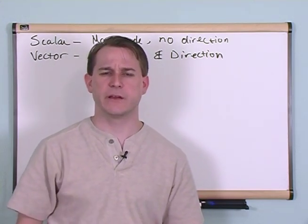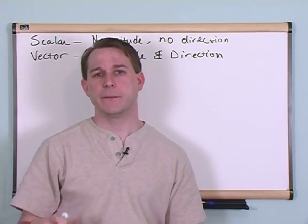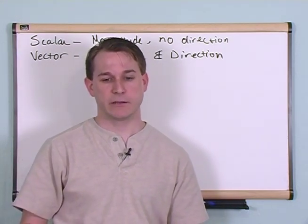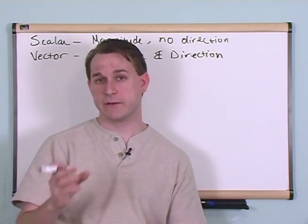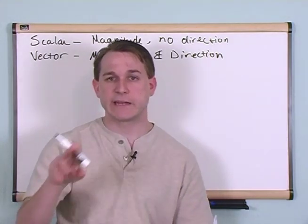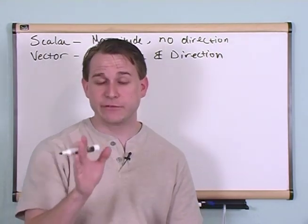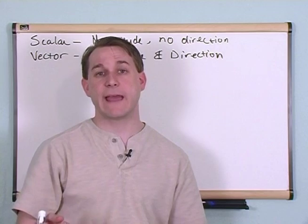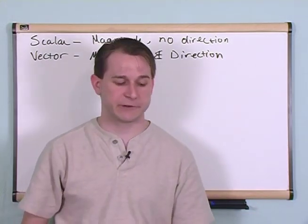There's tons of other vectors in real life. The electric field, the magnetic field, when you have two magnets and you start to plot the magnetic field lines, they have a magnitude, in other words a strength, and they have a direction, so they're pointing in a certain direction.